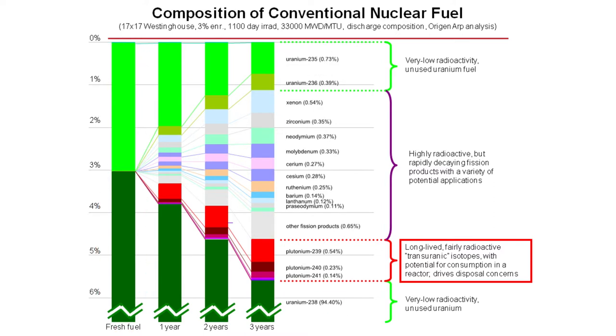As it burns down, first at a year, two years, and then three years, you see the formation of other things. These are the fission products, as well as some of the transuranics.